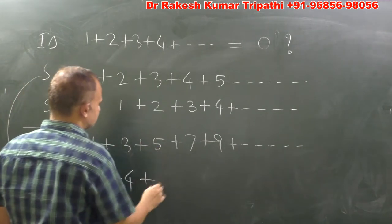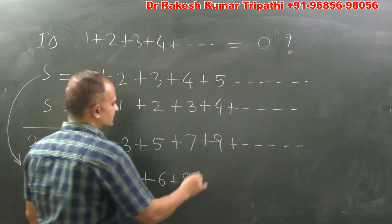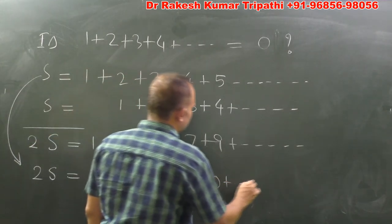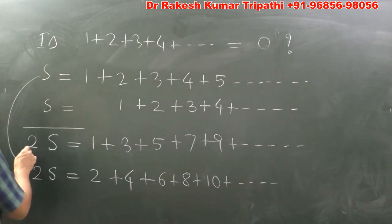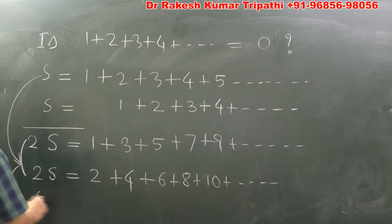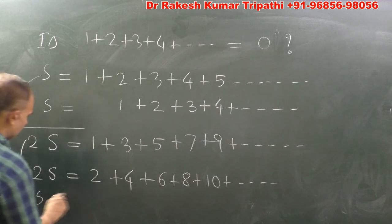So on adding these two, if I add these two series, I find or we find 2S is equal to 1 plus 2, alternately I am writing, plus 3 plus 4 plus 5 plus 6.